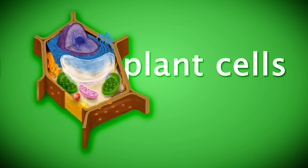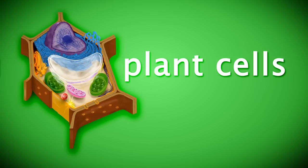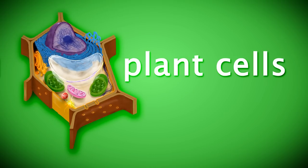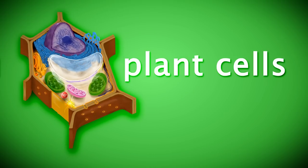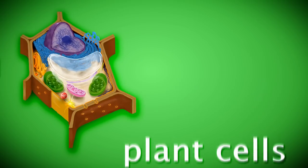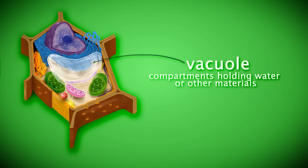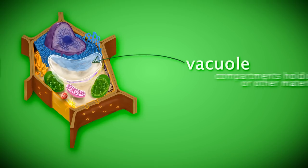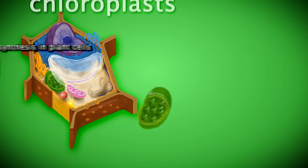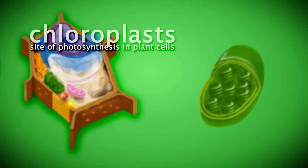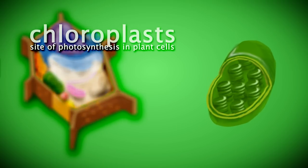Plant cells contain most of the same organelles and structures seen in animal cells, however there are some additions. Plant cells have vacuoles which store nutrients, waste, and pigments. Plant cells also have chloroplasts, which are the sites of photosynthesis.